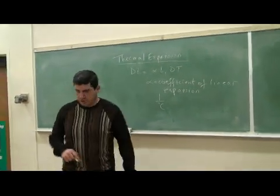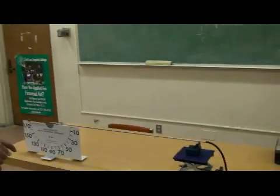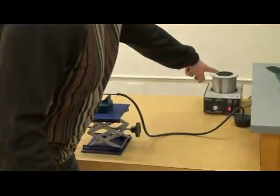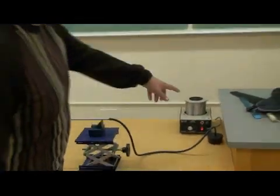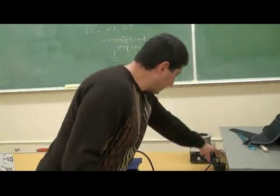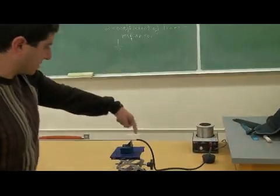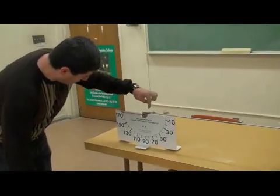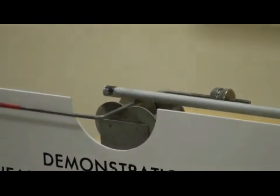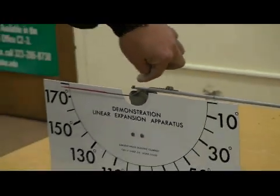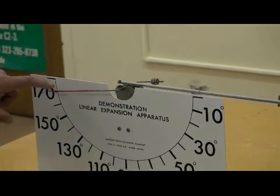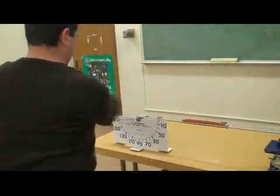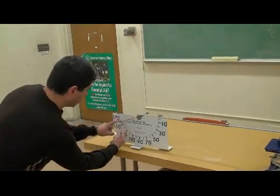So I'm going to show you a demonstration — this is actually an experiment we do in the physics class. We have an aluminum tube connected to a source of water that is currently heating up. When it starts boiling, the steam will rise and go through the tube. Over here the tube is placed on top of a pointer, and when the tube increases in length in this direction, the pointer is going to turn counterclockwise by a certain number of degrees.